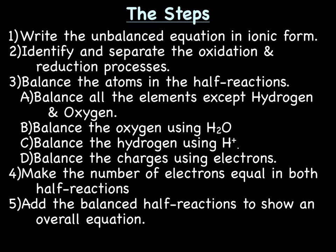First, write the unbalanced equation in ionic form, meaning anything that's aqueous — anything that's an ionic compound in solution — you're going to separate it into its ionic parts. Then identify and separate the oxidation and reduction processes. Third, balance the atoms in the half reactions, and step three has four parts.